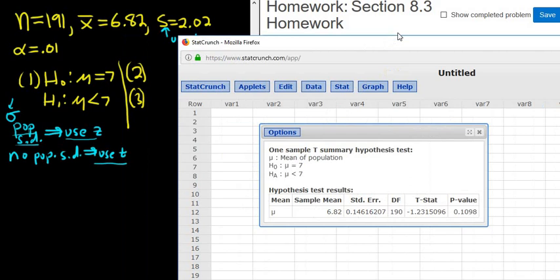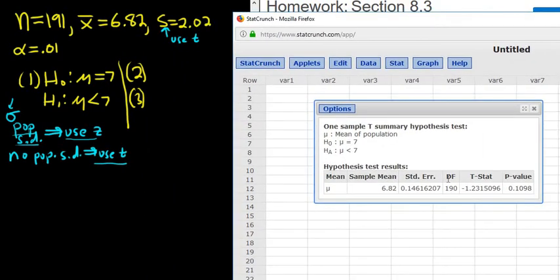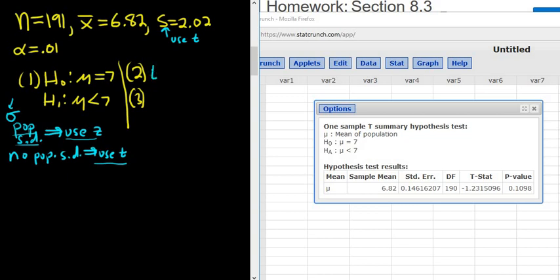And there we have all of the answers. So the test statistic is negative 1.23. That's t, so our t stat. So t is negative 1.23. And our p-value in this case, p-value, is 0.1098.